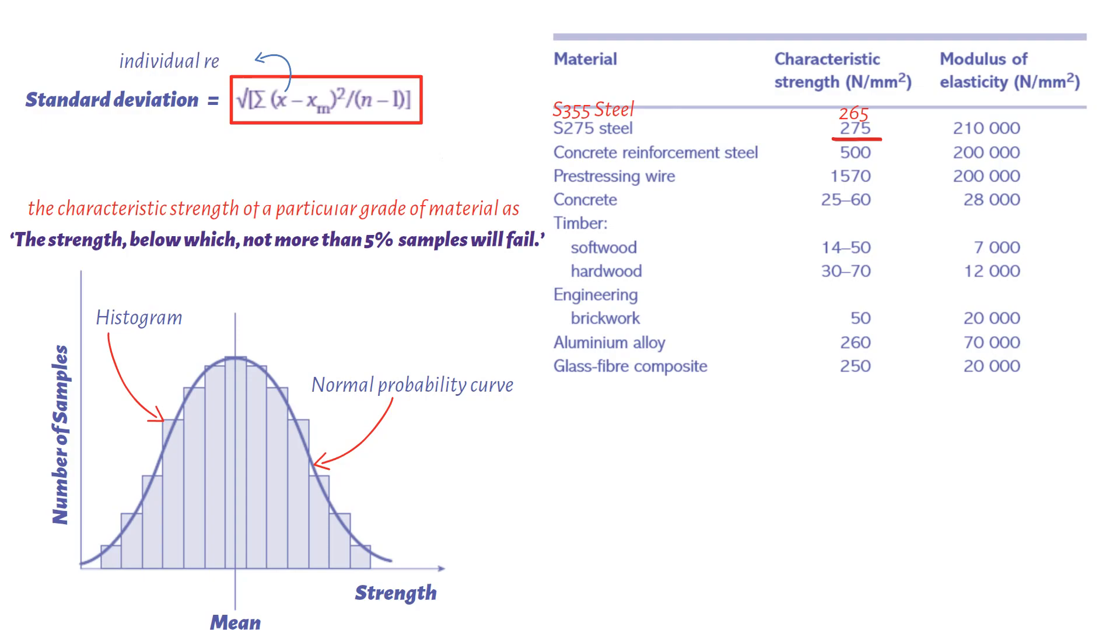Where x equals individual result, xm equals mean of results, and n equals number of results. It can be shown from the mathematics of the normal distribution curve that characteristic strength equals mean value minus 1.64 times standard deviation. Using this formula should ensure that not more than 5% of specimens will fall below the characteristic strength.